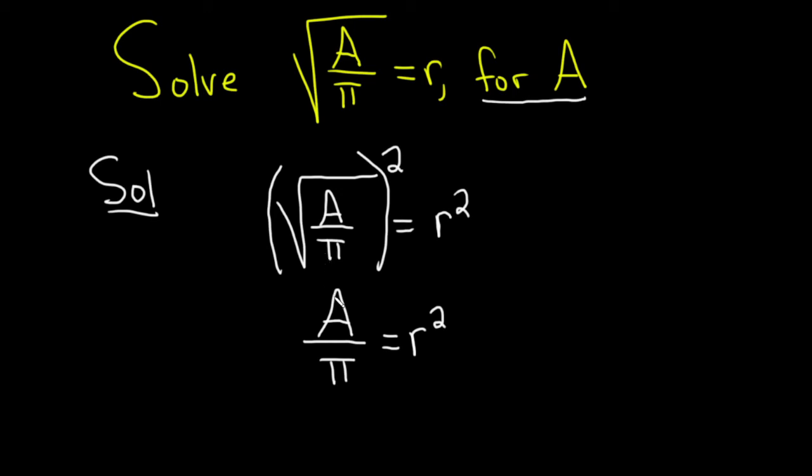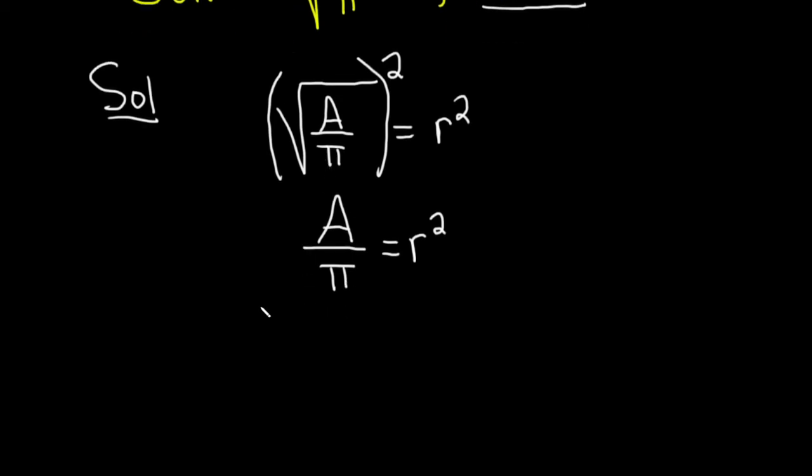Because the A is being divided by π, to get rid of it, we can simply multiply both sides by π. π times π go away, and so we get A equals r squared times π.